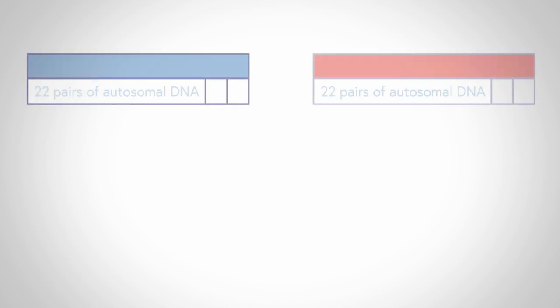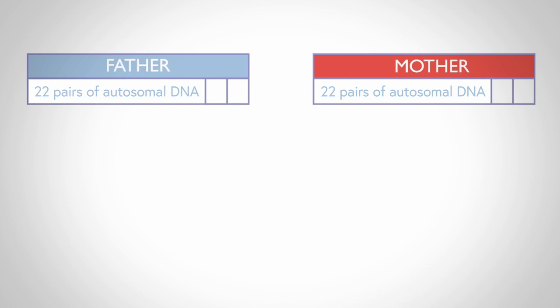Human DNA is contained in 23 pairs of chromosomes. 22 of these pairs are called autosomal chromosomes and the 23rd pair are the sex chromosomes. This video shows how the inheritance of the autosomal chromosomes is different from the inheritance of the sex chromosomes.